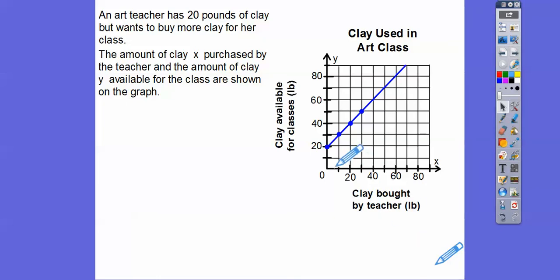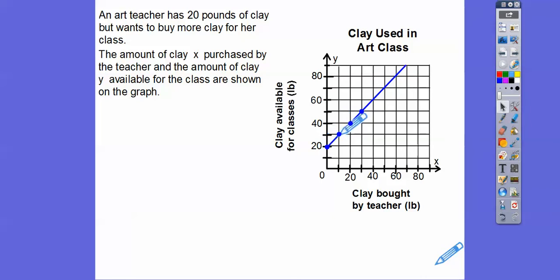Here's a graph. The x-axis shows clay bought by the teacher in pounds (LB), and the y-axis shows clay available for the class. If the teacher bought zero pounds, the class already had 20 pounds to start. If she buys 10 pounds, the class has 30 pounds available. The graph is a straight line because the teacher can buy any amount — not just 10-pound increments. For example, buying 5 pounds would give the class 25 pounds.